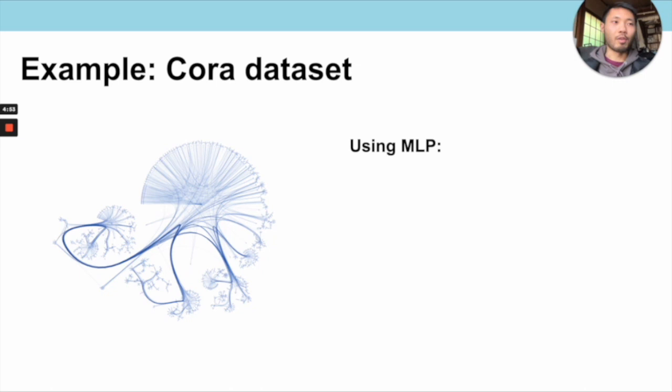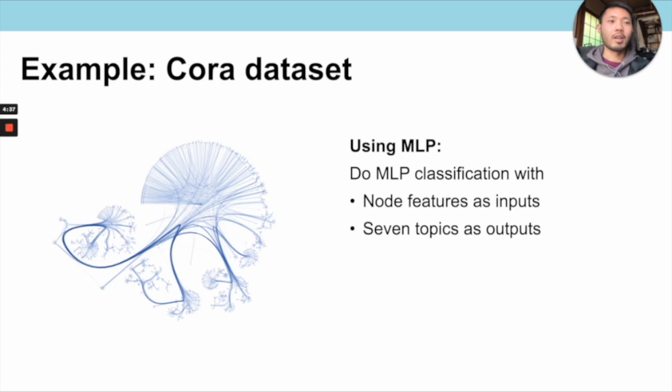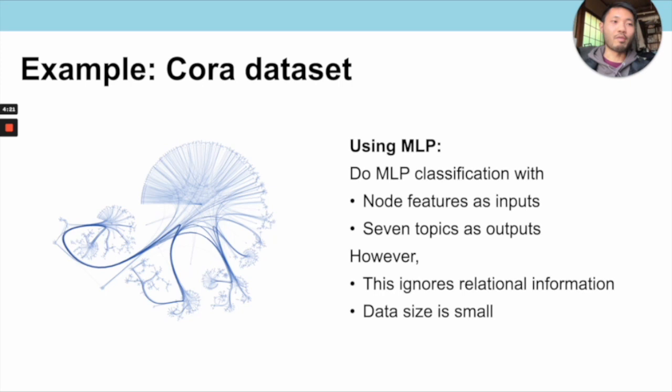The most trivial way to solve this node classification task is MLP classification with node features as inputs and the seven topics as outputs. This approach is clearly limited as it ignores any relational information between nodes, which is likely helpful since two articles connected by a citation are likely on the same topic. In addition, with only around 2,700 articles in total, this is prone to overfitting without any inductive bias.